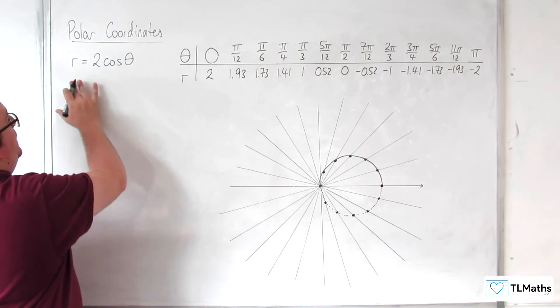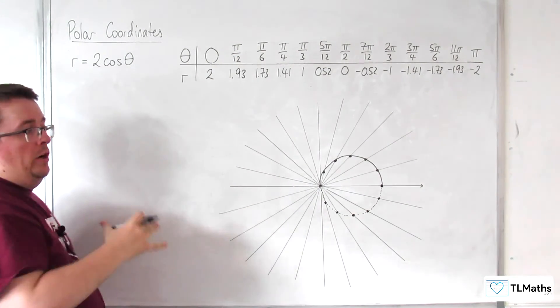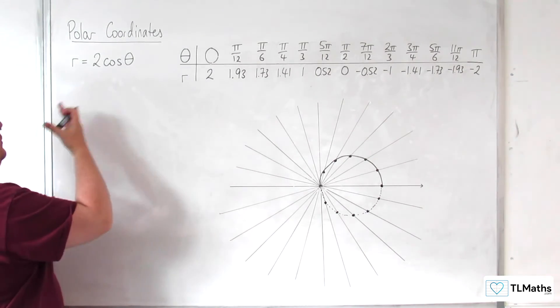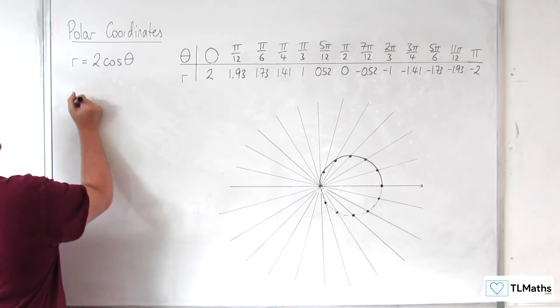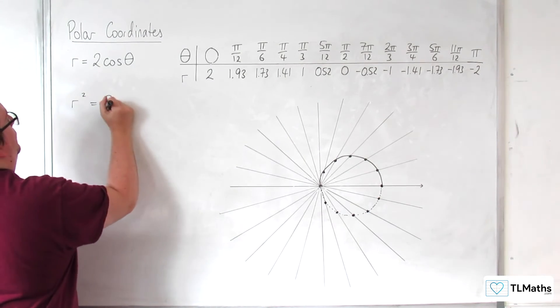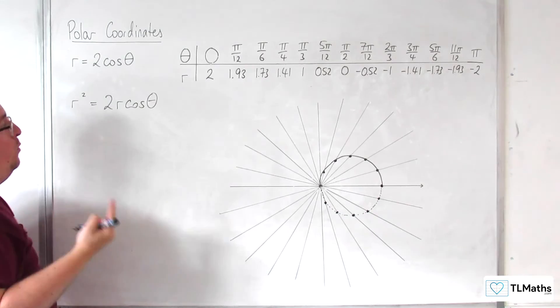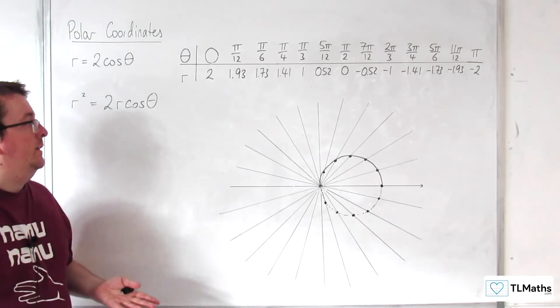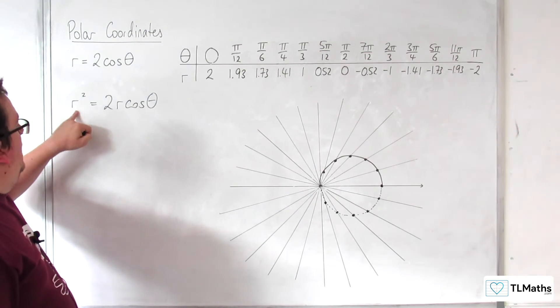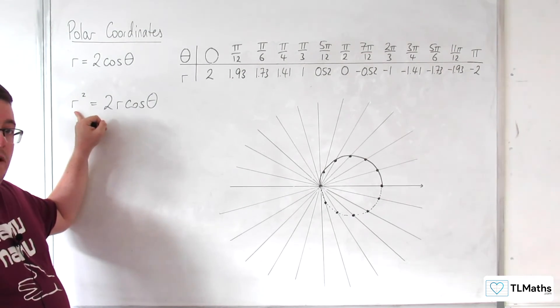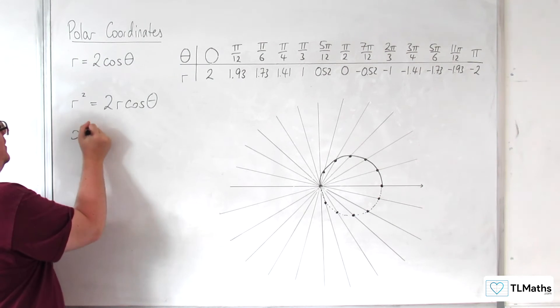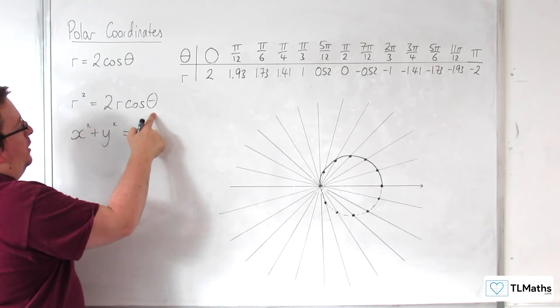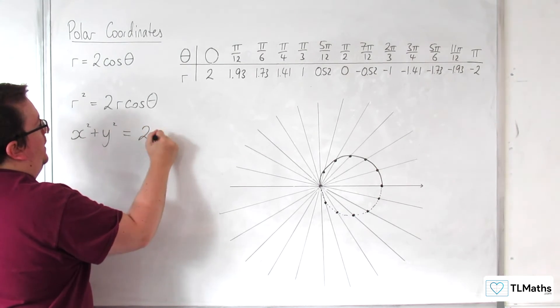Now you can see this in Cartesian form, and we can show that it's actually a circle if we multiply through by r. So we get r squared equals 2r cosine theta. The reason why I would do that is because r cosine theta I know to be x. The r I know is the square root of x squared plus y squared. So because that's squared, I just get x squared plus y squared on the left-hand side, and the r cosine theta is just x, so we get 2x.